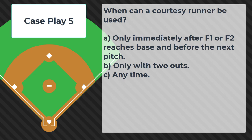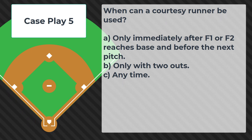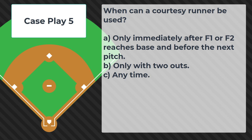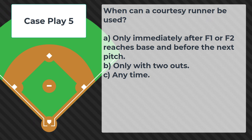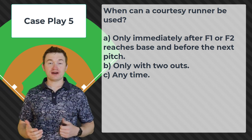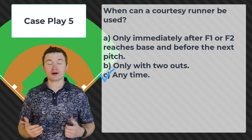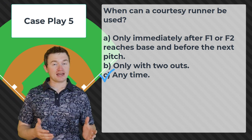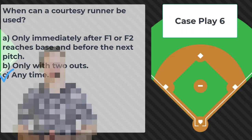Case play number five: when could a courtesy runner be used? A — only immediately after F1 or F2 reaches base and before the next pitch, B — only with two outs, or C — at any time? The correct answer is C. A courtesy runner can be put into the game at any time that the catcher or pitcher is a runner.